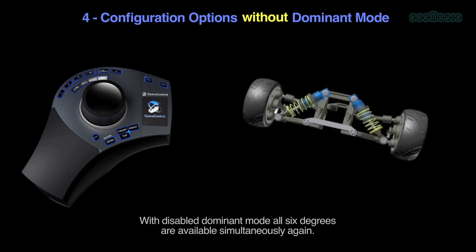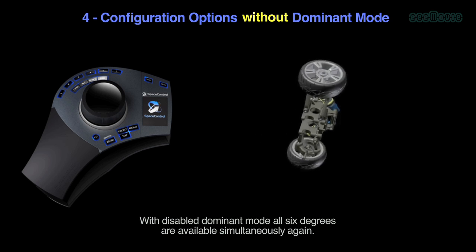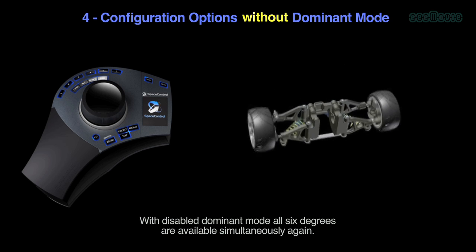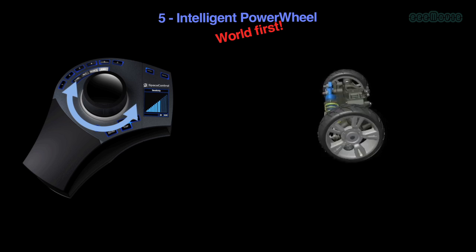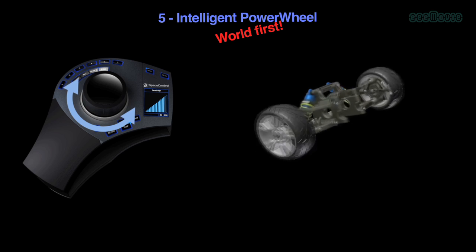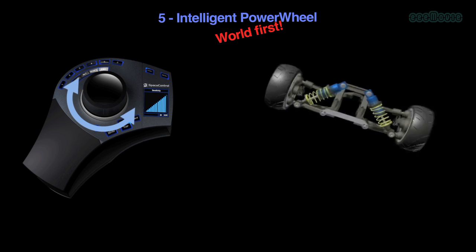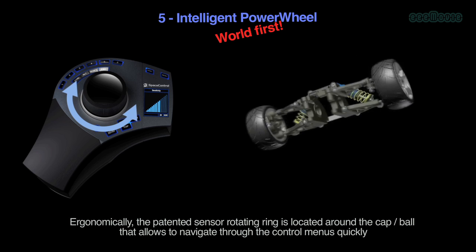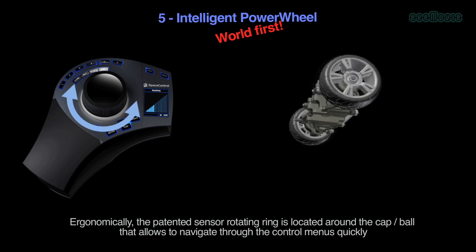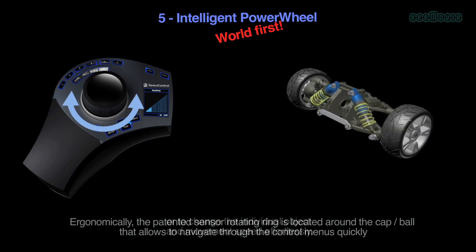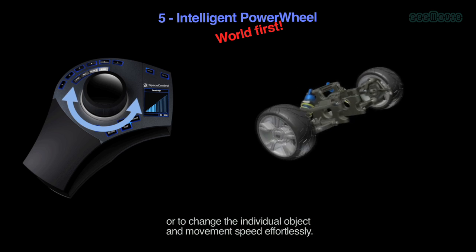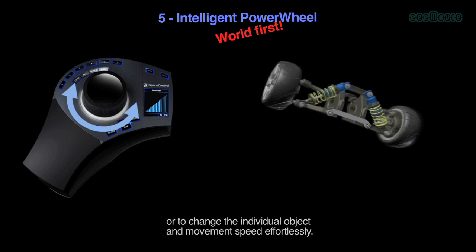Configuration options without dominant mode: with dominant mode disabled, all six degrees of freedom are available simultaneously. In standard mode, the ergonomically patented sensor rotation ring located around the cap or ball allows you to navigate through control menus quickly or to change the individual object movement speed effortlessly.